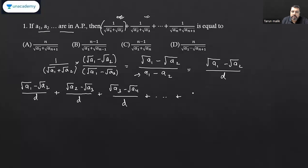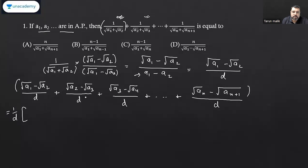Now I can take (1/d) as a common factor. When you add all these terms, you can see that √a₂ cancels out, √a₃ cancels out, √a₄ cancels out — all the intermediate terms cancel out. What we are left with is (√a₁ − √a_{n+1}) / d.